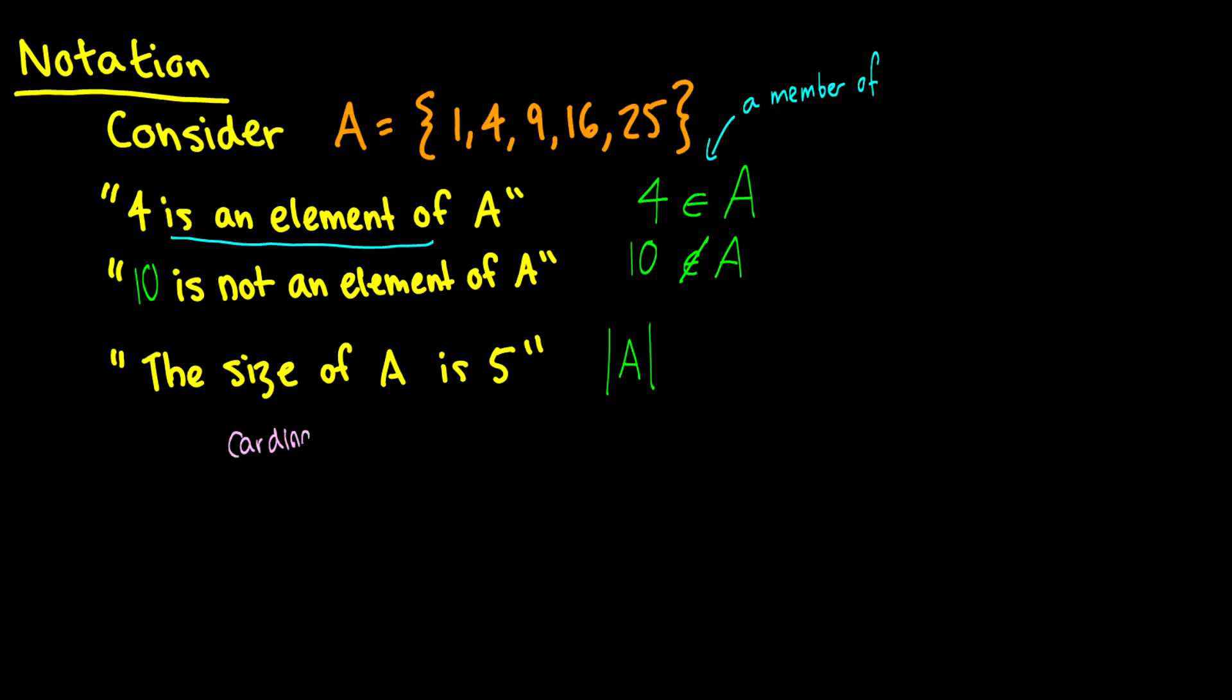And it's written like this with the two bars around A, and we just write that as equal to 5.